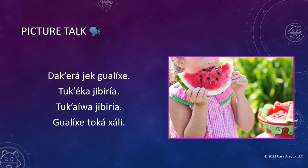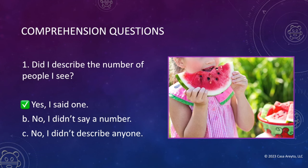Let's go back to our text. Do we see any numbers in any of these sentences? Correct! There is a number in the very first sentence and the number is 'heck.' And if we look at the word that immediately follows, it says 'gualiche.' Do you remember what gualiche means? That's right — it means girl. So we have the answer. Let's go back to our comprehension question. Our answer is: yes, I said one, because I said 'heck gualiche' — one girl. Not bad, right?